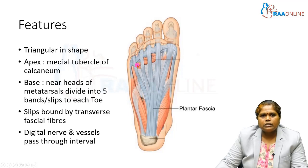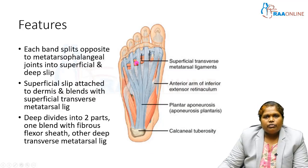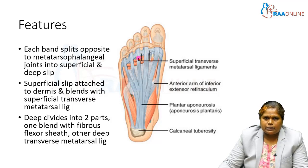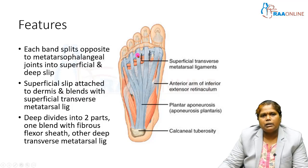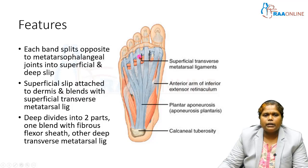The digital nerves and vessels pass through the intervals between the slips. Each band or slip divides into a superficial and a deep slip. The superficial slip attaches to the dermis and blends with the superficial transverse metatarsal ligament. The deep slip divides into two parts: one continuous with the fibrous flexor sheath, and the other continuous with the deep transverse metatarsal ligament.